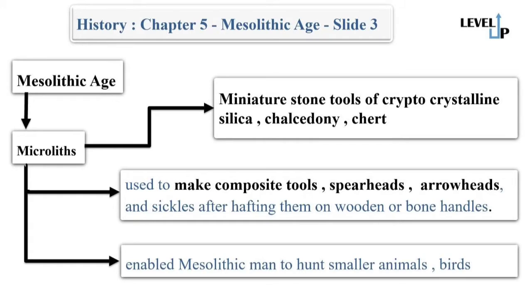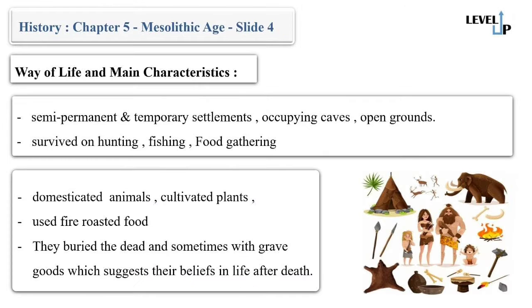The microliths enabled Mesolithic man to hunt smaller animals and birds. Mesolithic people lived in semi-permanent and temporary settlements, occupying caves and open grounds. They survived on hunting, fishing, and gathering, and in later stages also domesticated animals along with cultivating plants. This culture is thus assigned to pre-agriculture times in most areas. These people used fire and perhaps roasted food too. They buried the dead, sometimes with grave goods, which suggests their belief in life after death.